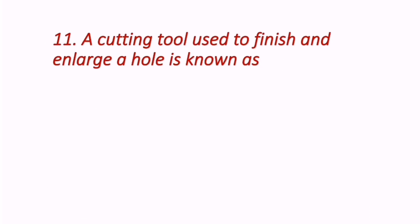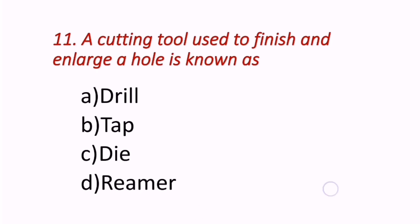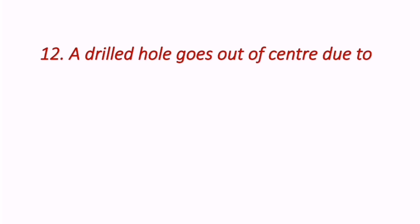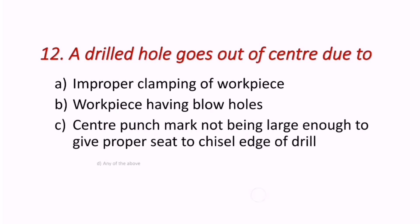Eleventh question: A cutting tool used to finish and enlarge a hole is known as? Looking at the figure, that is a reamer — D is the correct answer. Reamer is used to finish and enlarge a hole. Twelfth question: A drilled hole goes out of center due to? The correct answer is any of the above — it may be improper clamping of work piece, work piece having blow holes, or a center punch mark not being large enough to give a proper seat.